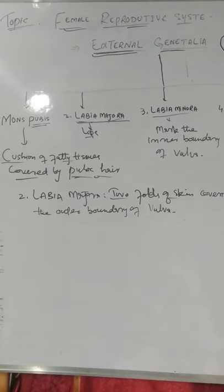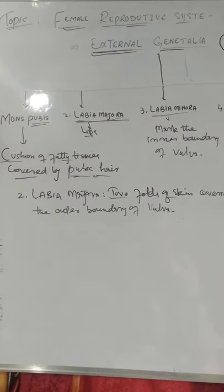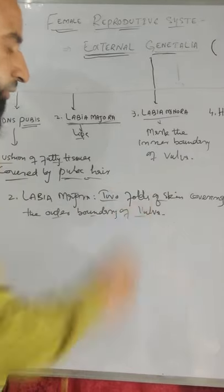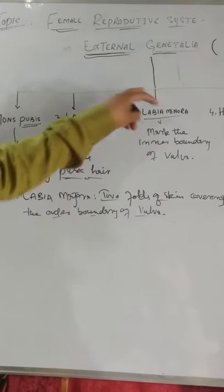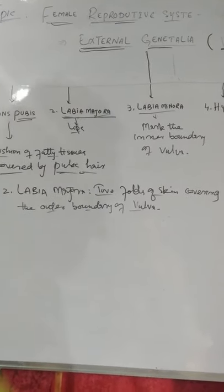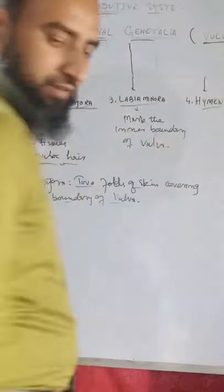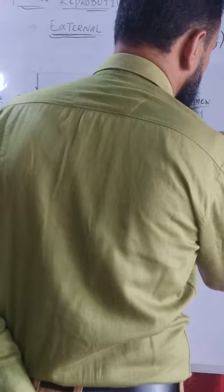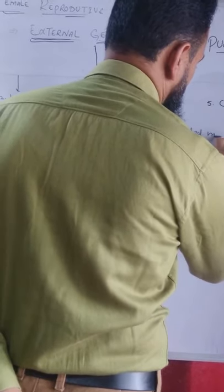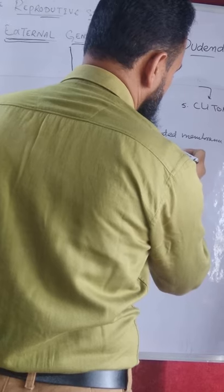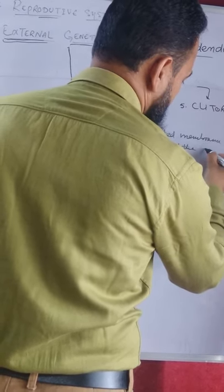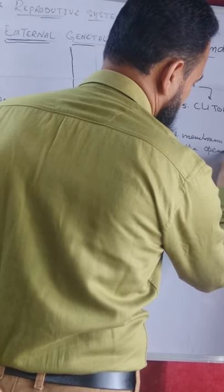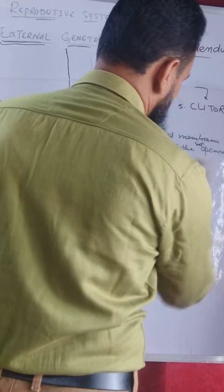Hymen is a perforated membrane which guards the opening of the vagina. Labia majora are two folds of skin covering the outer boundary of the vulva, also covered by hair. Labia minora mark the inner boundary of the vulva. The hymen is the perforated membrane which guards the external opening of the vagina.